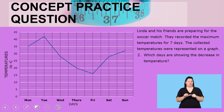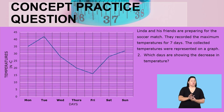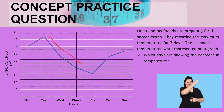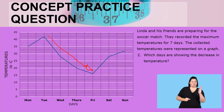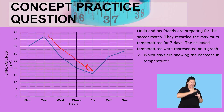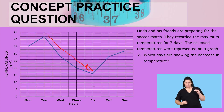Let us continue with the next question: Which days are showing the decrease in temperature? Remember, we said for a decrease, the slope will be going downwards. So if the shape is going downwards, this is showing a decrease in temperature. Here it's an increase, it's a decrease, it's an increase, and it's another increase.